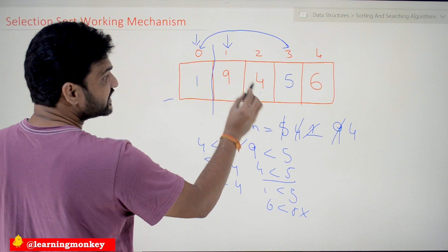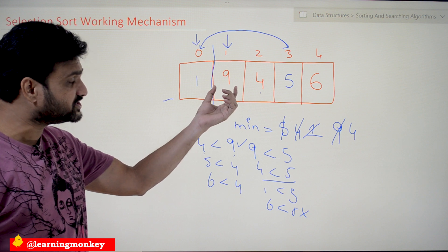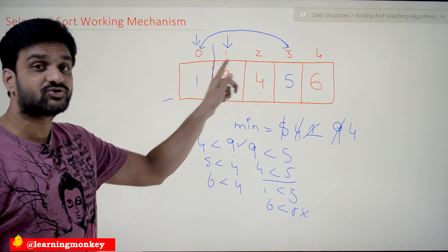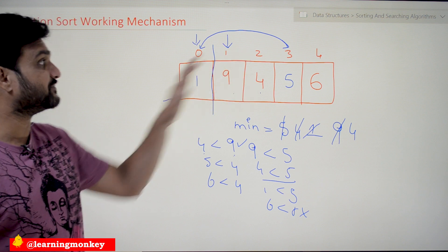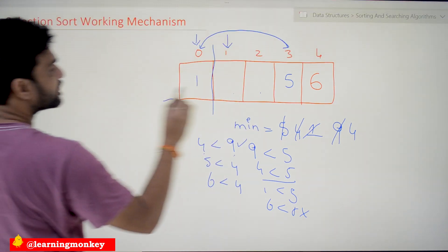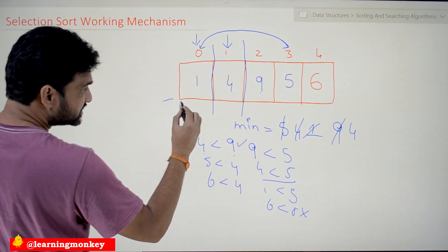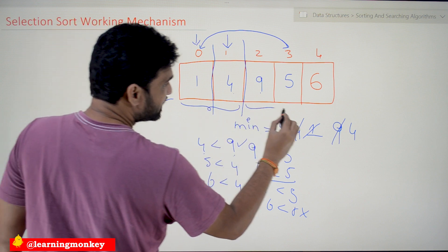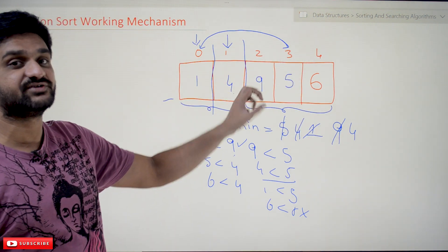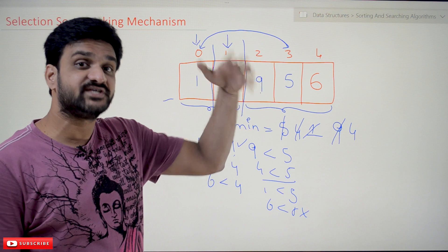We need to bring the minimum element — 4 — to this position. Since 4 is already identified in its position, these two elements, 4 and 9, are to be swapped. After swapping, the array now has 4 at this position and 9 moves to the unsorted section. The sorted part of the array has grown, and the remaining elements are still in unsorted order and need to be arranged.